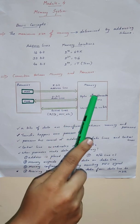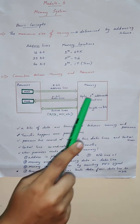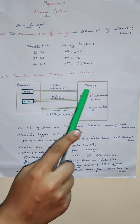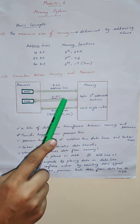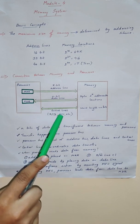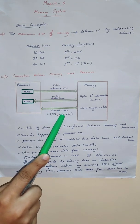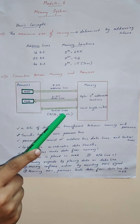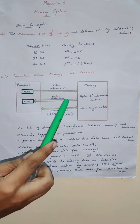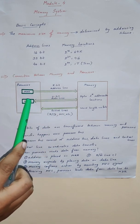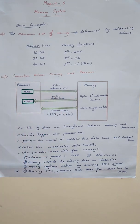Now how does a memory respond to this read operation? The memory will place the particular data at that location onto the data line. It will also assert a memory function complete signal. Once the processor sees the memory function complete signal, it will place the data from the data line into the memory data register. This is how a read operation happens.